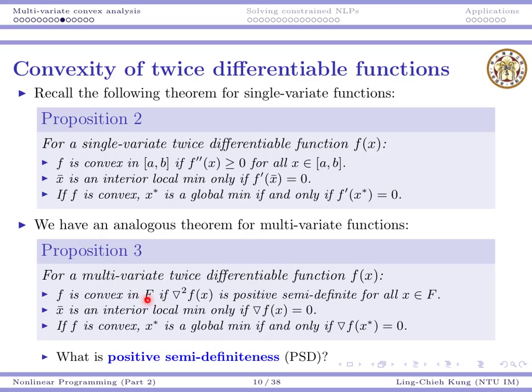For multivariate functions, it's similar. f is convex in a region, capital F. Here, because we have multiple variables, the feasible region is a subset of the R-n space. f is convex in the feasible region if the Hessian matrix is positive semi-definite for all x in this region. We will talk about positive semi-definite later — it's a generalization of non-negative second-order derivatives.